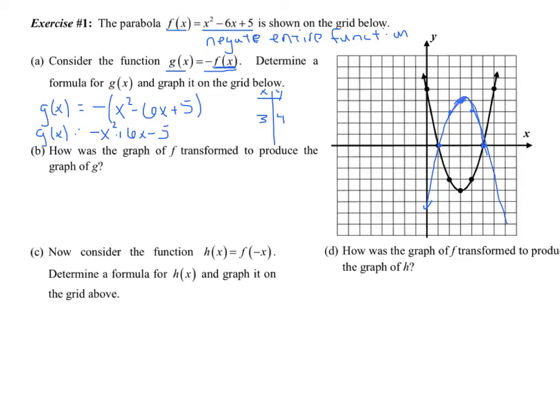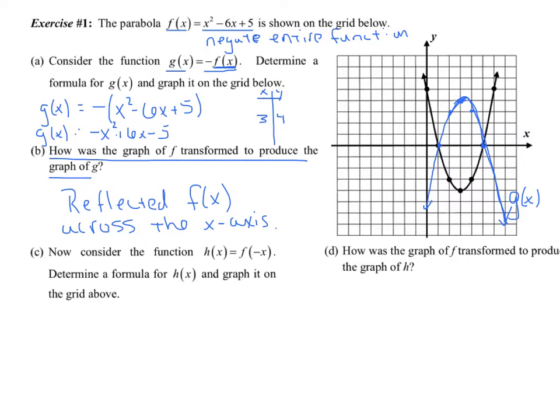So what just happened here? Compared to the original graph, we just reflected f above or across the x-axis. So in order to answer b, they said, how is the graph of f transformed to produce the graph of g? So the blue guy was g here. We reflected f of x across the x-axis. Alright, let's switch colors here.